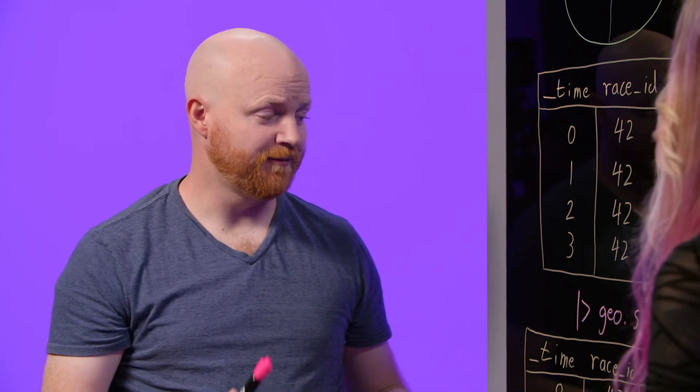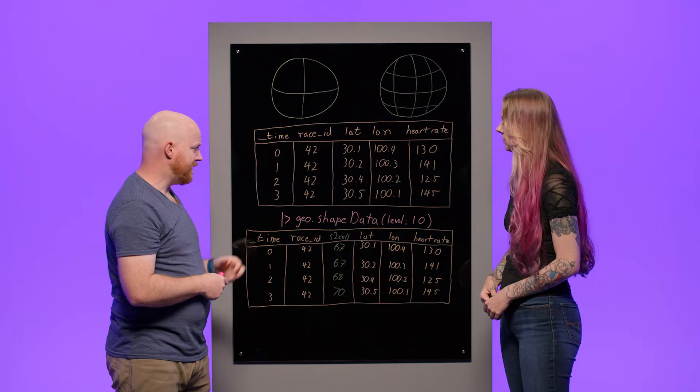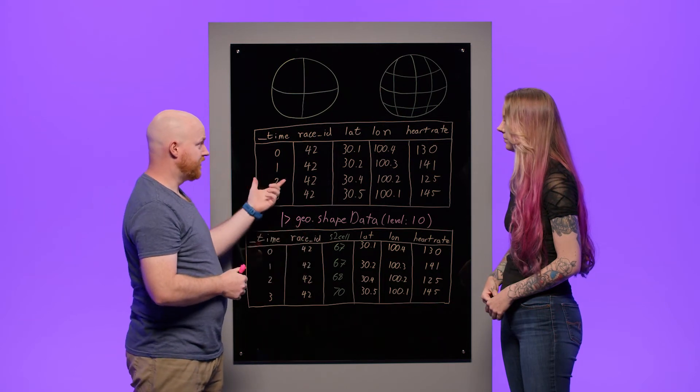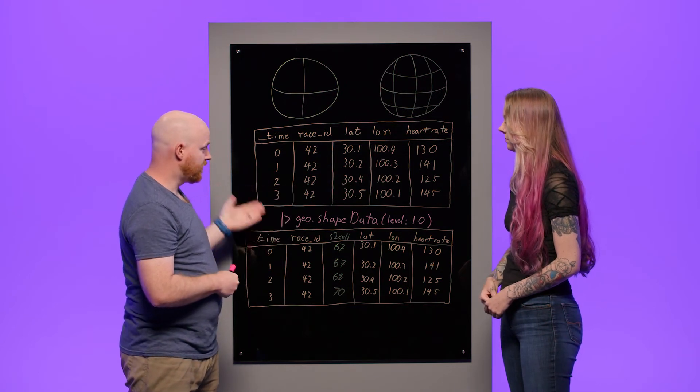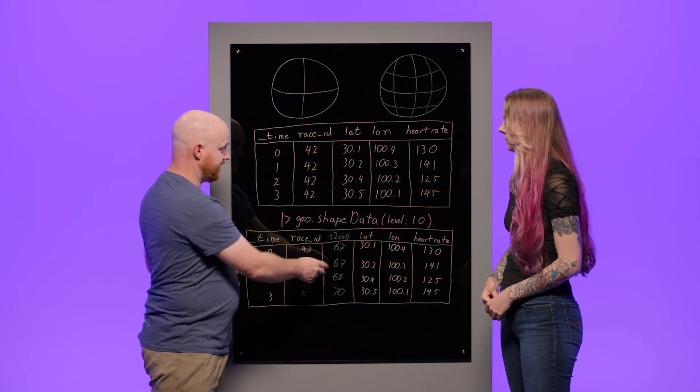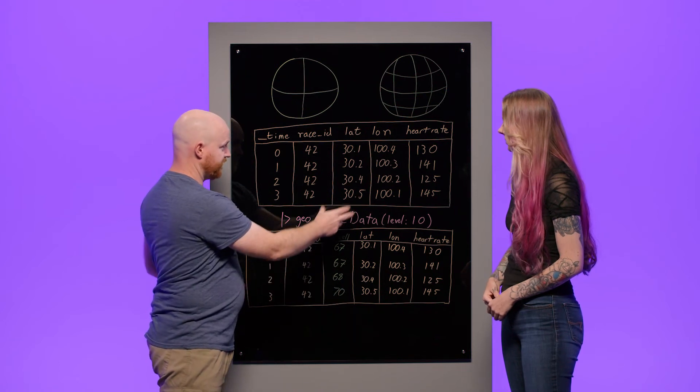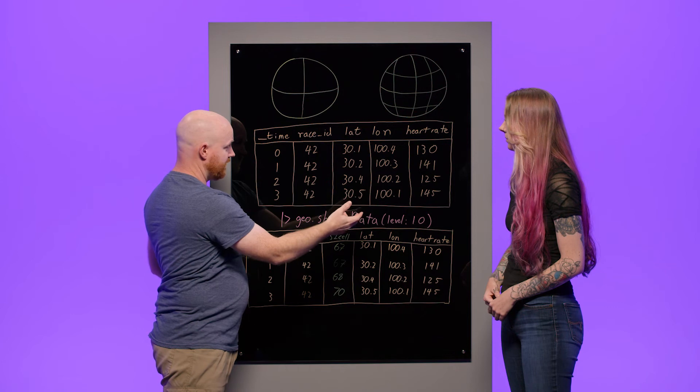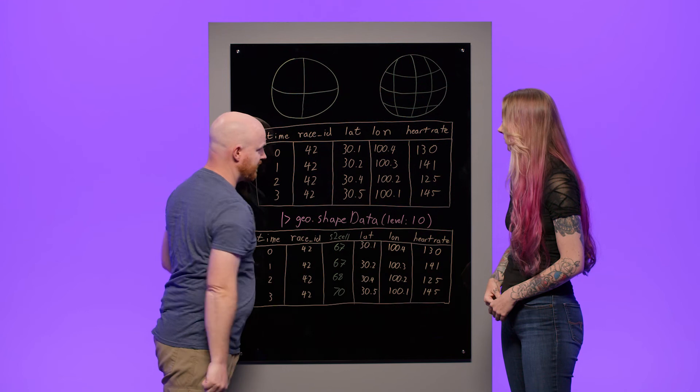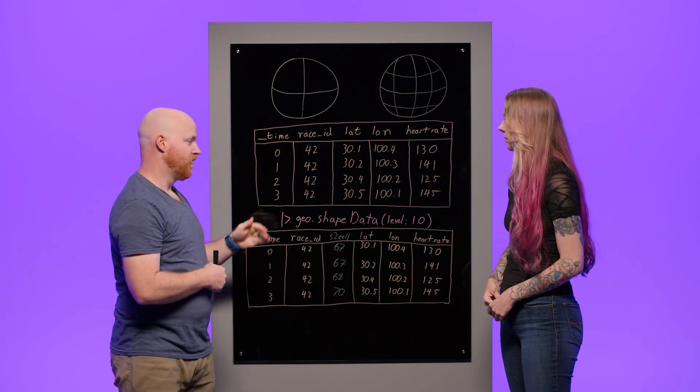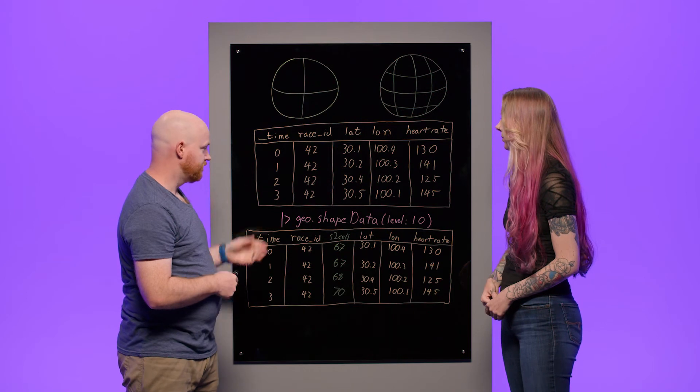Being that you're on the Flux team, how can I leverage S2 using Flux? Yeah, great question. So Flux standard library comes with a package called Geo. It's currently experimental, but will be promoted in the future. And that package has a function called shape data that can take your data that's just your latitude and your longitude data, your basic geotemporal data, and you can convert it into data that has an S2 cell column. And so what it will do is it will take your data, compute the cell ID for every row in your data, and then add that to your data. And notice we pass in the level here to this shape data function. This is where we pick what level of resolution we care about. And so input data, output data.